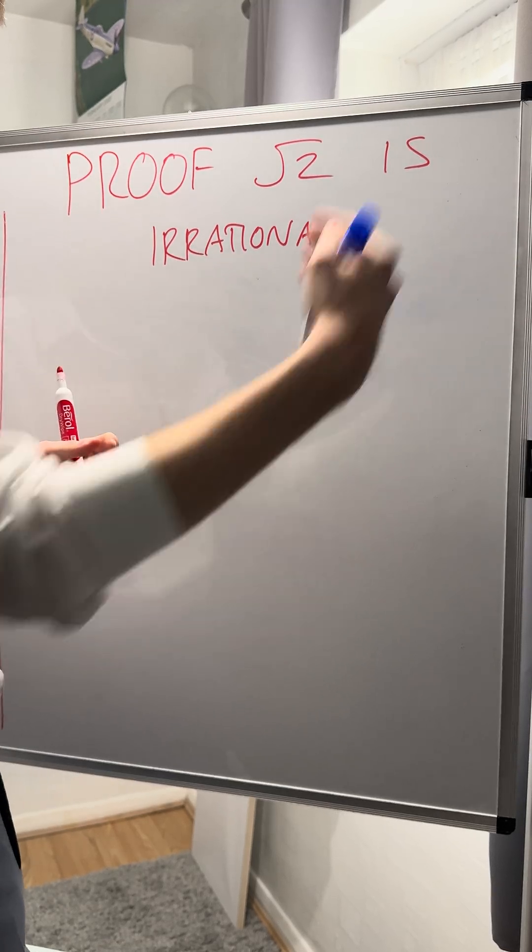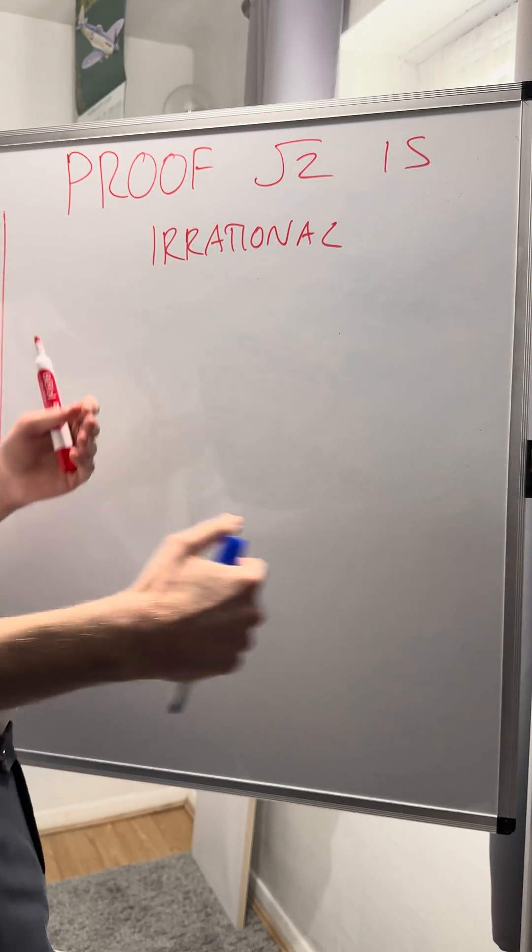For example, pi: 3.14159265, etc., goes on forever. How do I prove that applies to root 2?